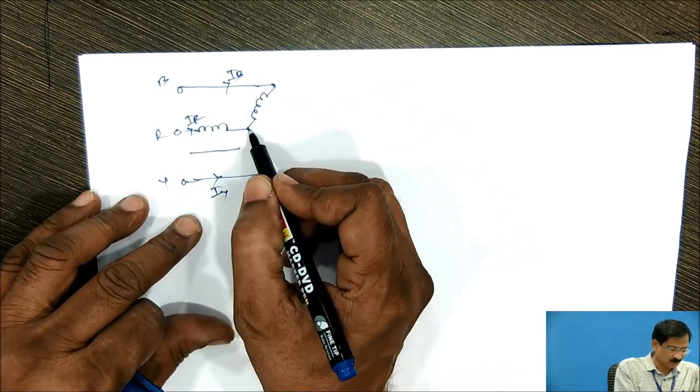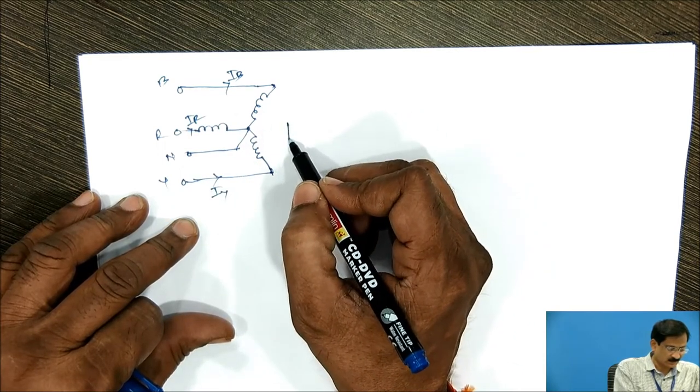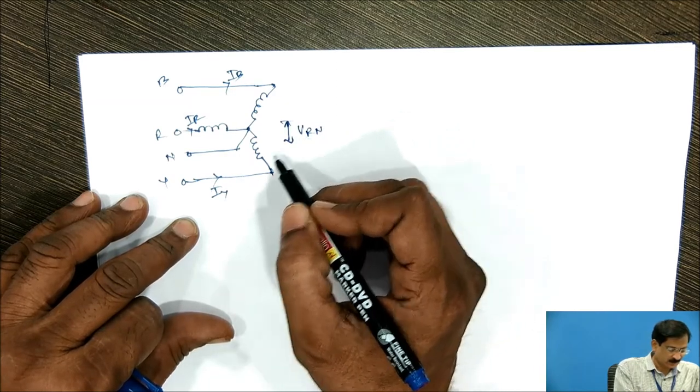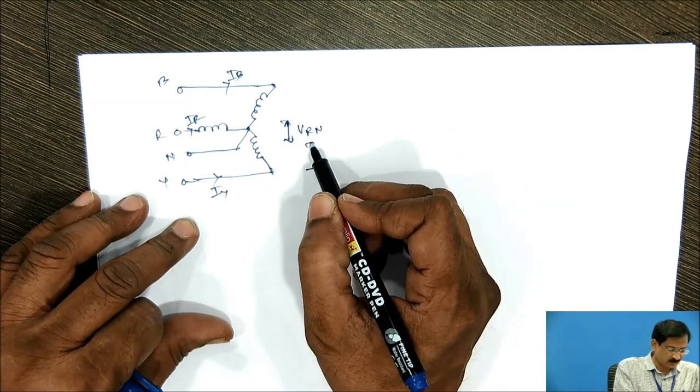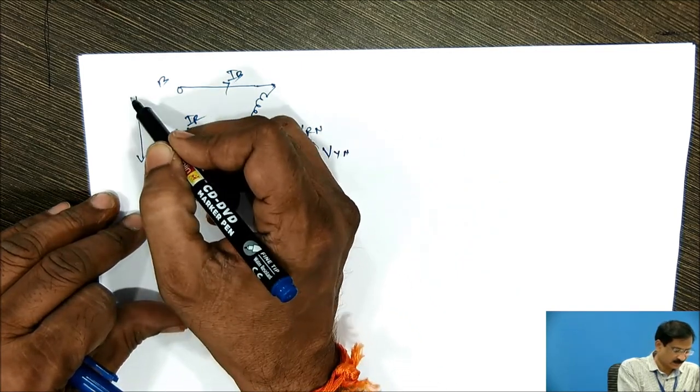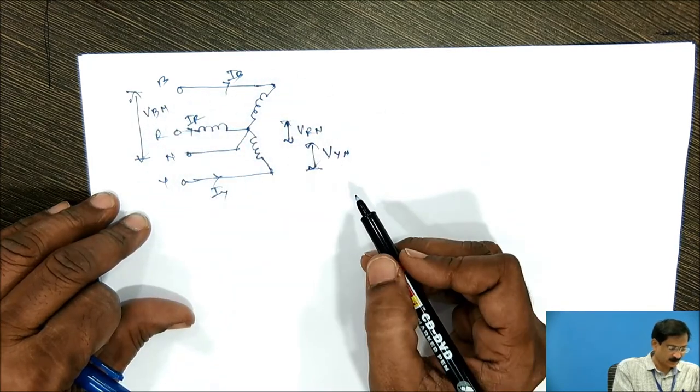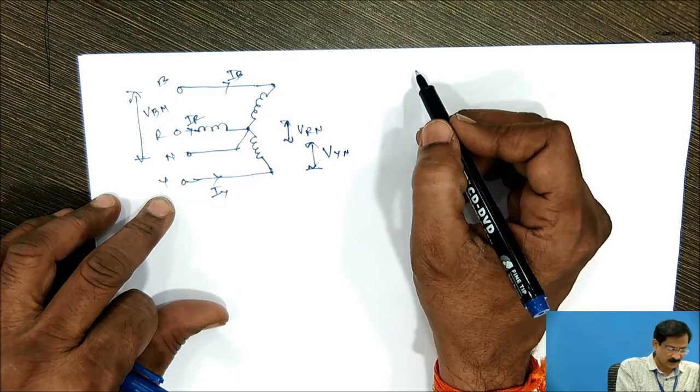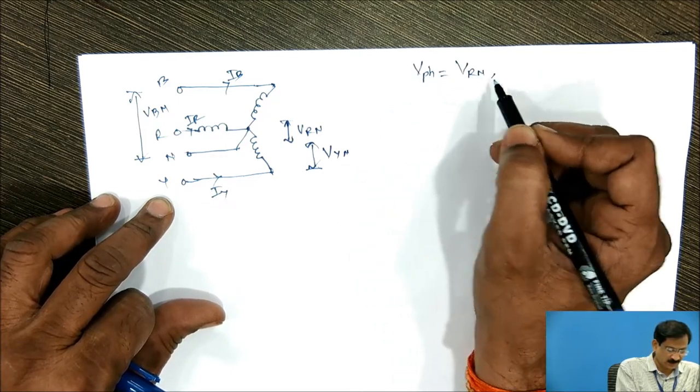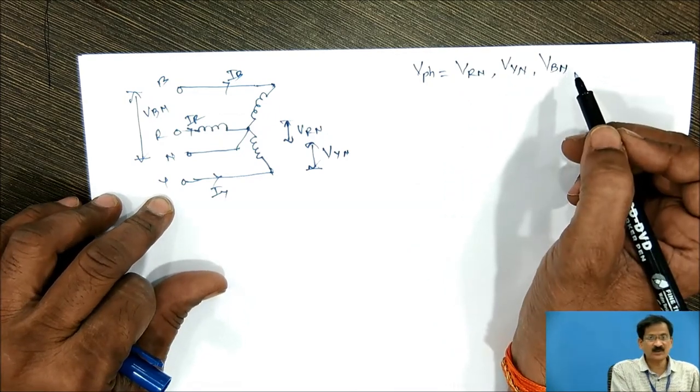This is a neutral fourth line. This is VRN, this is VYN, and this is VBN. Here, I will write which are the phase voltages: VRN, VYN, VBN. These are the phase voltages.